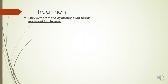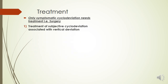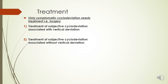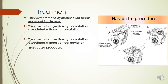Regarding treatment, it is only performed when there is a symptomatic need for the patient, and surgery is the primary option. When subjective cyclo deviation is associated with vertical deviation, surgery can be done. The Harada-Ito procedure is used for subjective cyclo deviation — it involves surgery on the superior oblique tendon, performing either a weakening or tightening procedure to correct overaction or underaction.